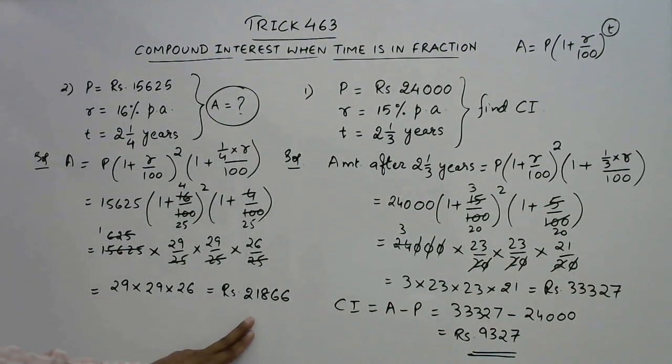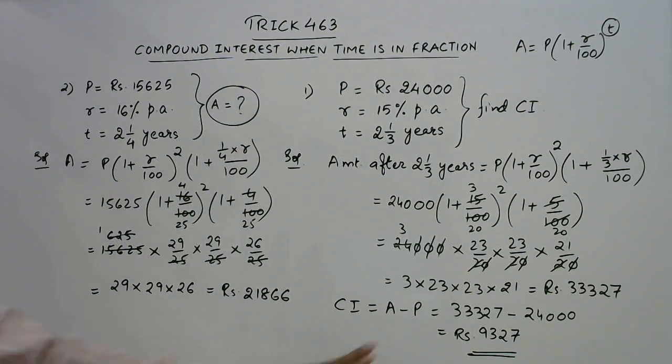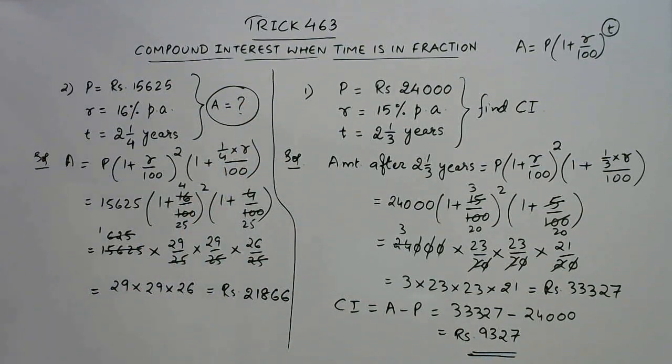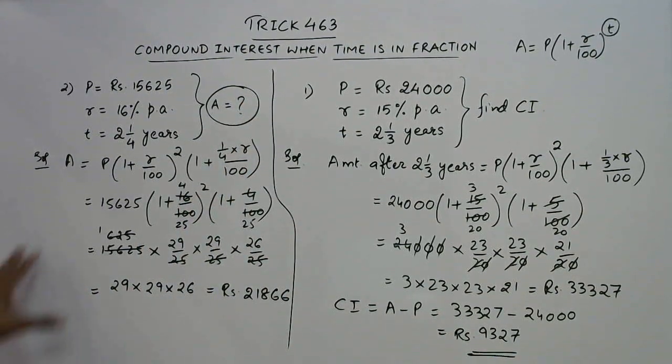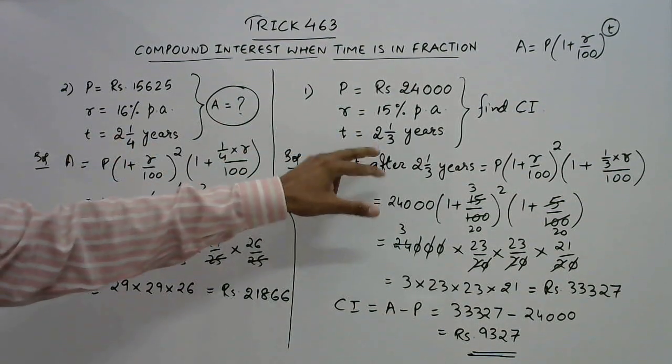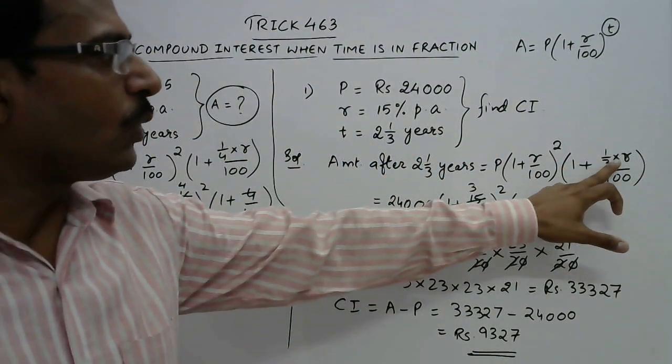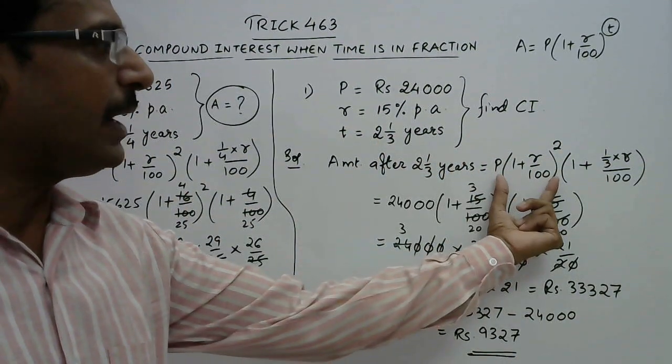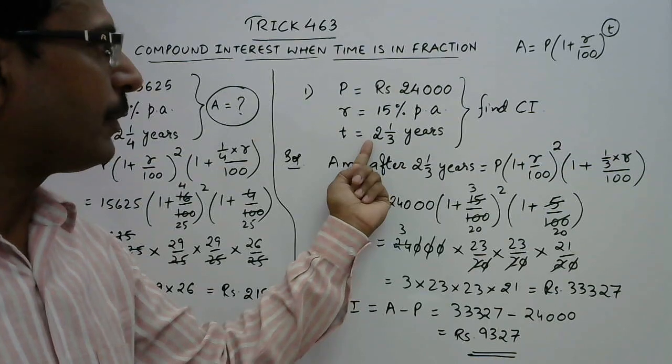So this is the method you need to remember for dealing with such problems in which the time given is in fractions. Whatever fraction is given here that will become the coefficient of r in the second bracket, and this will be preceded by the rounded number of years.